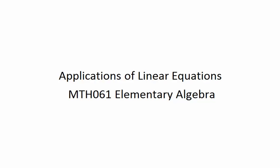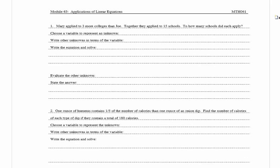In this video we're going to be looking at applications of linear equations. In number one it says: Mary applied to three more colleges than Joe. Together they applied to 15 schools. To how many schools did each apply?